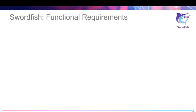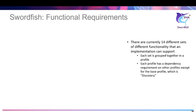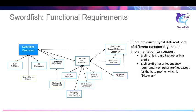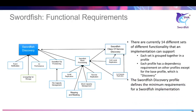Swordfish is defined in terms of features. Each feature corresponds to a set of functionalities that is grouped together into a set of related functions from a client perspective. The detailed requirements to support individual feature properties and implementation constraints are documented in profiles. There are currently 14 defined features and corresponding profiles. The base or starting feature and profile is for Swordfish Discovery.